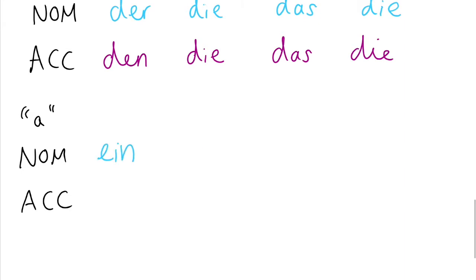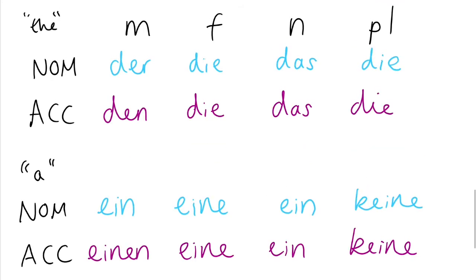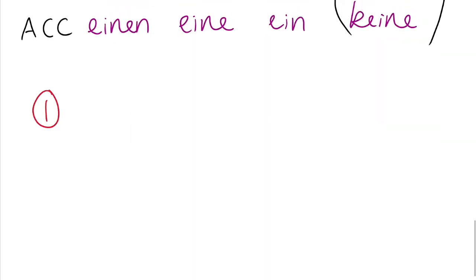And it's the same for a. Ein, eine, ein, and kein. We don't have the word a in the plural. You can't say a apples. So just use kein instead. And the accusative, einen, eine, ein, kein. Okay. So we've got the hang of that. We can see the word the and a changes in German. Not just because of the gender or the plurality of the word, but also because of the case.